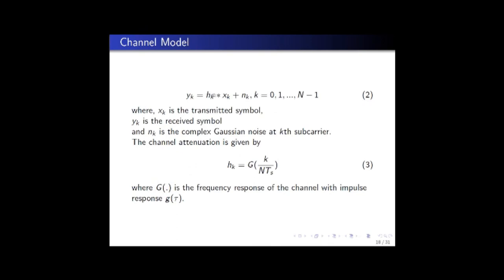If XK is the transmitted symbol at Kth subcarrier and HK is the channel attenuation at Kth subcarrier, then the received symbol for the Kth subcarrier YK at the receiver would look like equation two, where NK is the complex Gaussian noise added at the Kth subcarrier. From this expression we can find that the channel attenuation for the Kth subcarrier is given by G(K/NTS), where G is the frequency response of the channel with impulse response G(τ).